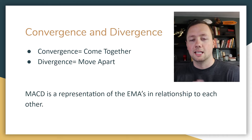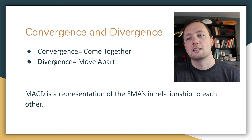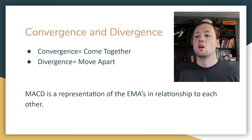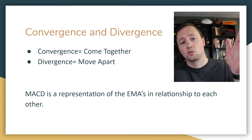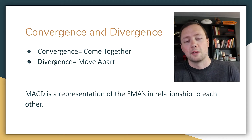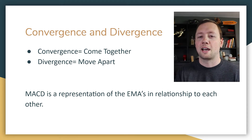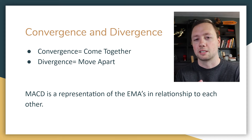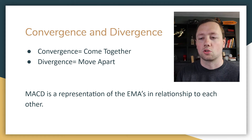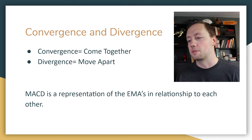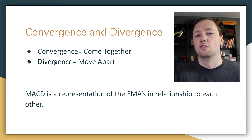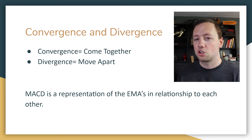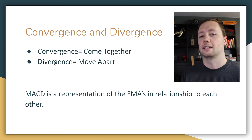The other side of MACD is the C and D — Convergence and Divergence. Convergence means come together and divergence means move apart. We're using the MACD to see if those moving averages are coming together or going apart and what direction they're going in. The MACD is a representation of the exponential moving averages' relationship to each other.